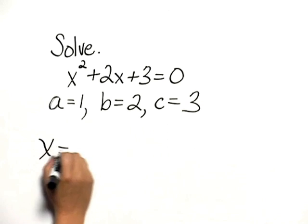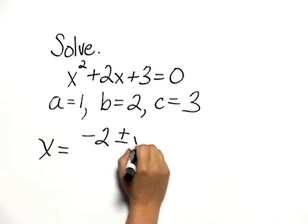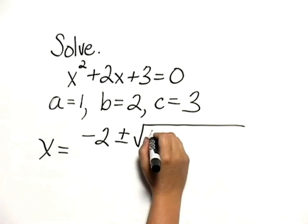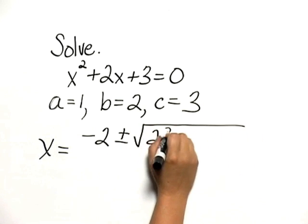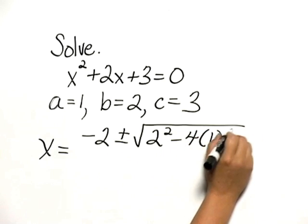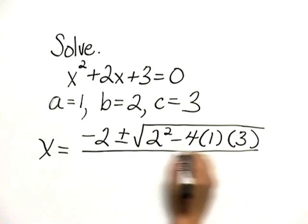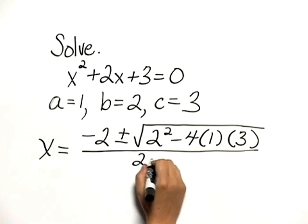So then x would be the opposite of b, which is negative 2, plus or minus the square root of b squared, which is 2 squared, minus 4 times a, which is 1, times c, which is 3. All of that is over 2a, or 2 times 1.